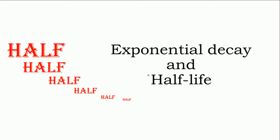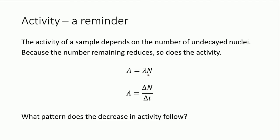Hello, this video is all about exponential decay and half-life within radioactivity. Here's a little reminder about activity. The activity of a sample, which is how many nuclei are actually decaying per second, depends on the number of undecayed nuclei that you have at any point in time. So you have a certain number of nuclei and when you multiply that by the decay constant, i.e. the probability that any one of the nuclei will decay per unit time, you get a value for the activity.